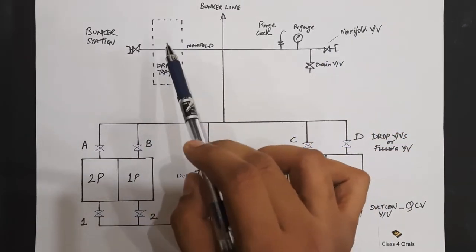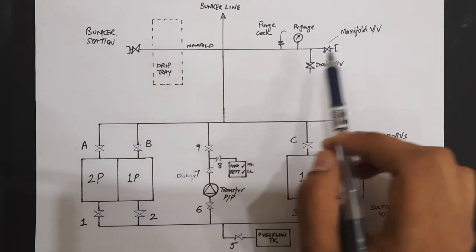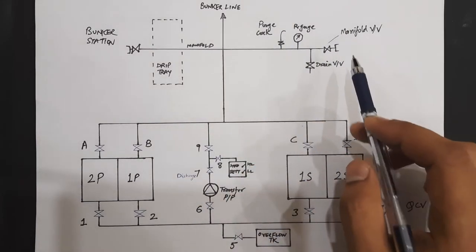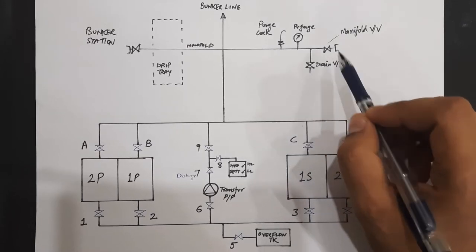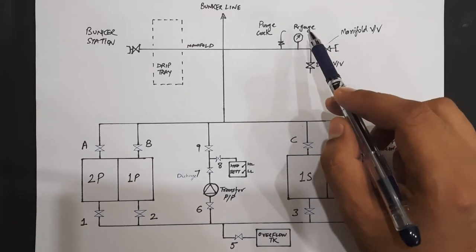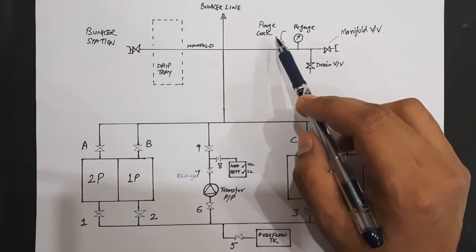This is a bunker station. This is also bunker station. You can see the drip tray given on both of the sides. Let us focus on one side of the bunker station. You can see the bunker manifold valve or the master valve, the drain valve, the pressure gauge which is well calibrated and this one, perch cock.